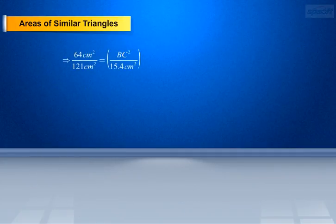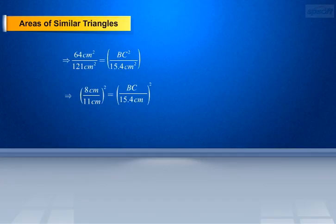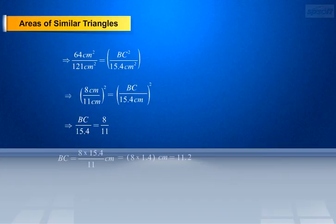64 cm² by 121 cm² equals BC² by 15.4 cm whole square. This implies that 8/11 whole square equals BC/15.4 cm whole square. This implies that BC/15.4 equals 8/11. On doing cross multiplication we get BC equals 8 × 15.4 by 11 cm. This implies BC equals 11.2 cm.